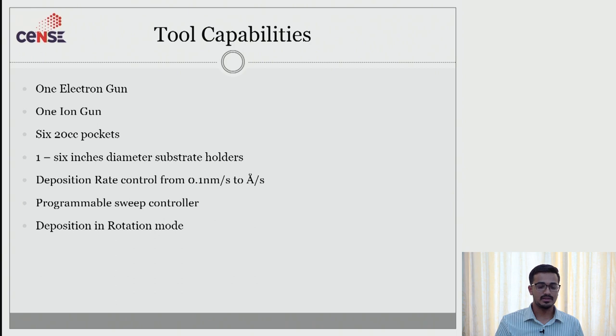Coming to tool capabilities. We have one gun and one ion gun and six pockets of 20 cc and one 6 inch diameter substrate holder. And the deposition rate can be controlled from 0.1 nm per second to few angstroms. Also we have a programmable sweep controller and deposition mode should always be in rotation.